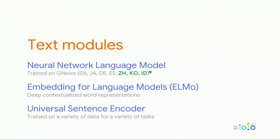We have a lot of text modules available on TF Hub. We just added three new languages to the NNLM modules — Chinese, Korean, and Indonesian — all trained on news training data. We also have a great module called ELMO from recent research, which understands words in context, and of course the universal sentence encoder.